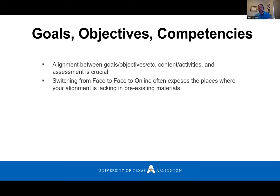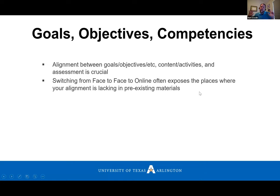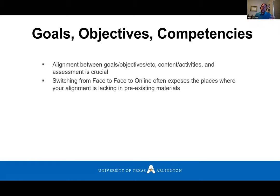This is difficult when you're switching from face-to-face to online because it often exposes places where your alignment is lacking in pre-existing materials. When I've worked with professors to help them move courses online, we often found places — sometimes after the course had gone live — where they're actually testing things they had written into test material but hadn't realized they'd gone off on tangents or side trails without including them in their materials. Because of the rolling nature of face-to-face courses, they didn't know there wasn't alignment between what they were testing, what they were teaching, and what their goals were.